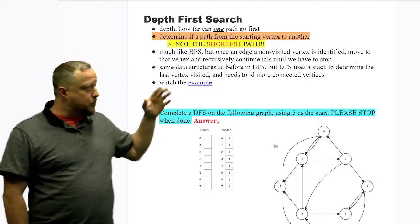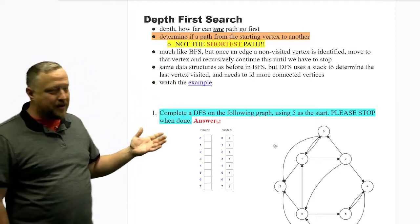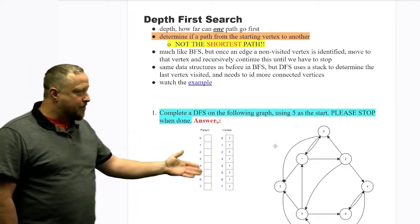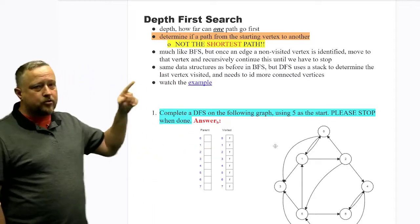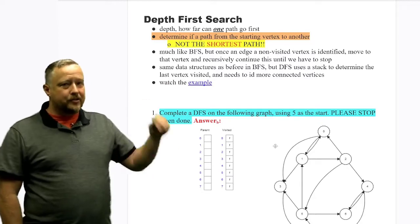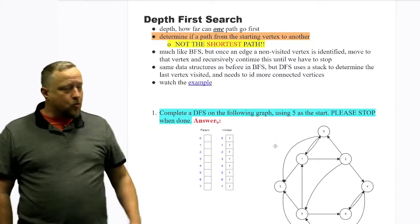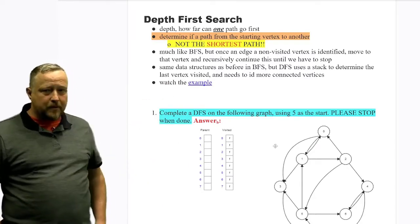So it's going to be very similar to a breadth first search. A breadth first search, you're going to have the parent and who visited. That all happens. But this time you're going to be using the stack data structure. And I'll show you why here in a moment in the example that's about to play.